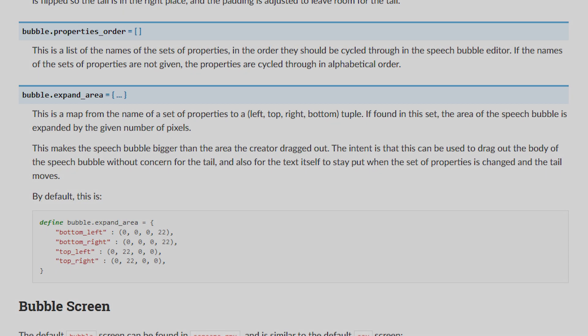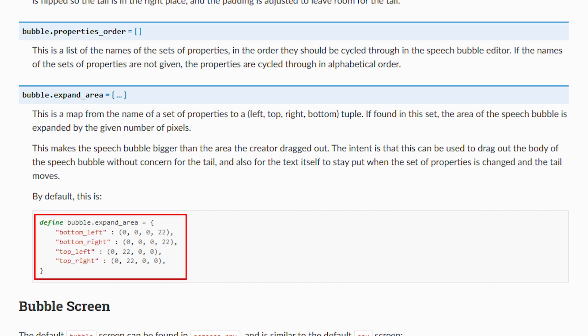The last property we'll have a look at is called bubble.expand_area. With this, you can change the size of a bubble by expanding it beyond its normal size. This is a dictionary variable that contains all the different bubble types and how much each of them should expand in each direction.